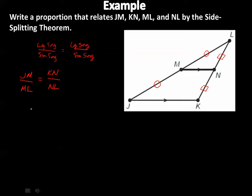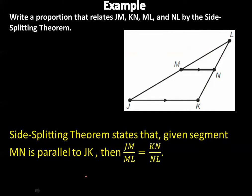Another way to write it: JL over ML equals KL over NL. Again, I put the large segment in the numerator and a portion of that segment in the numerator on the other side — it always has to be corresponding. There's more than one way, but you have to make sure they're set up correctly. That matches the answer key.